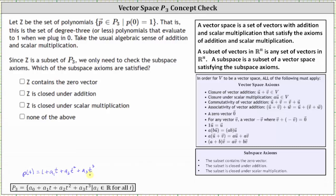Since Z is a subset of P3, which of the subspace axioms are satisfied? So first, Z contains a zero vector. Well, the zero vector is 0 in P3. And notice the polynomial P(t) in the subset Z can't be 0 because we know the constant term must be 1. And therefore, Z does not contain the zero vector. We do not check this box.